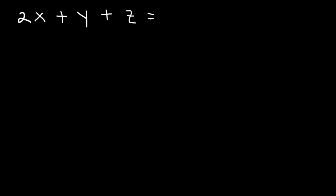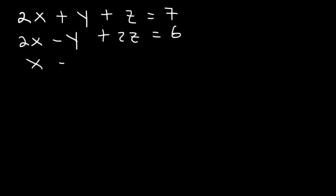Now, what can we do to solve a system of three equations? Let's say that 2x plus y plus z is equal to 7, and 2x minus y plus 2z is equal to 6, and x minus 2y plus z is equal to 0. Feel free to pause the video if you know how to solve it.